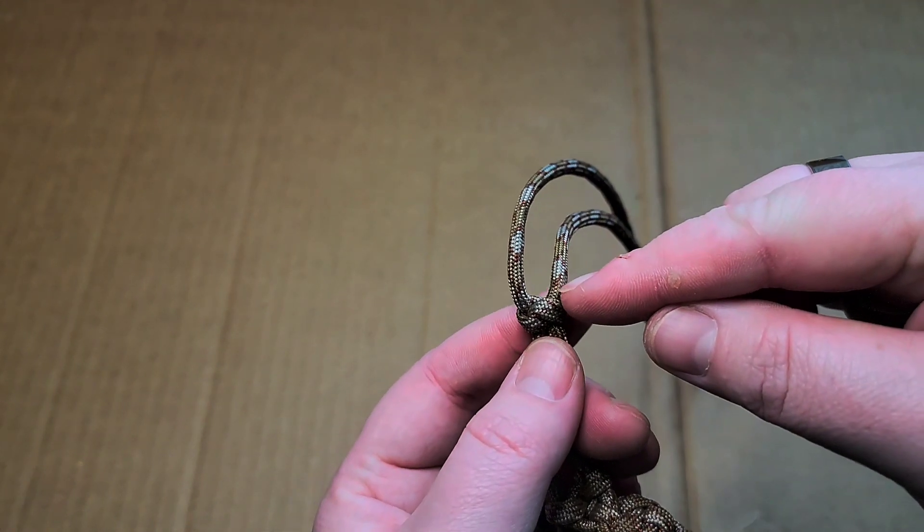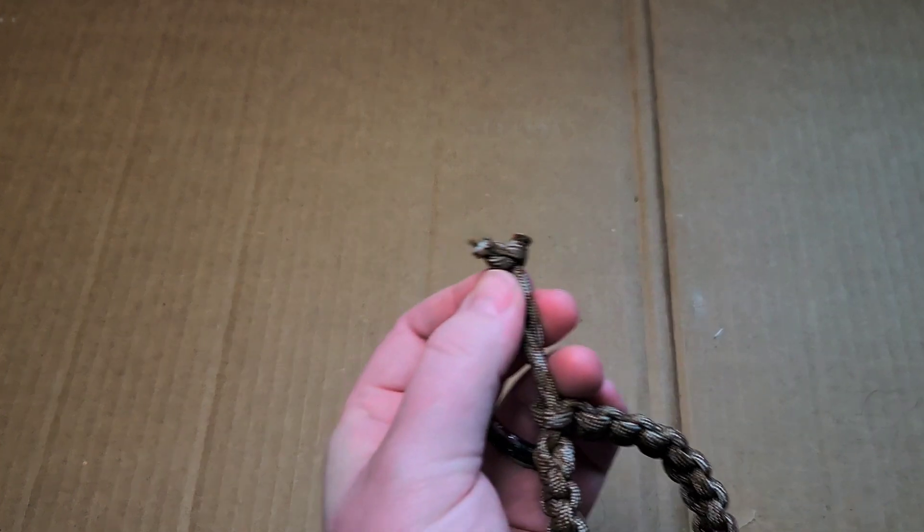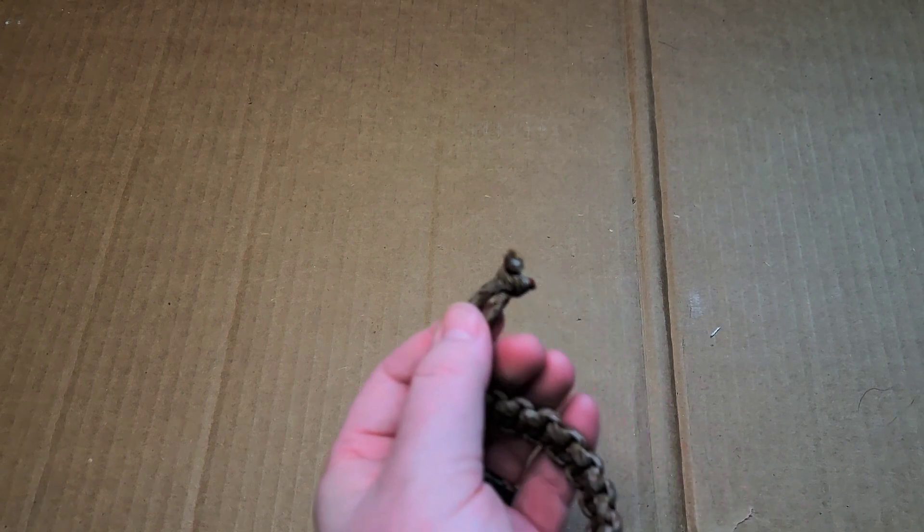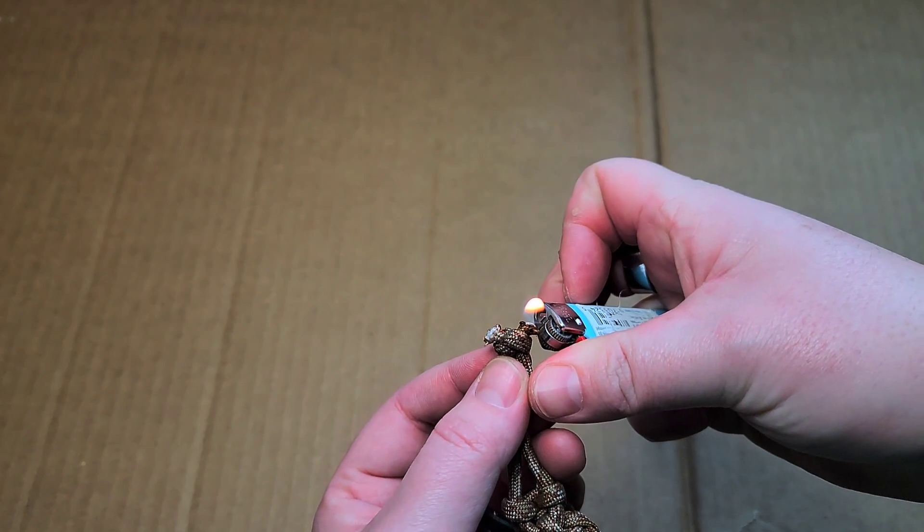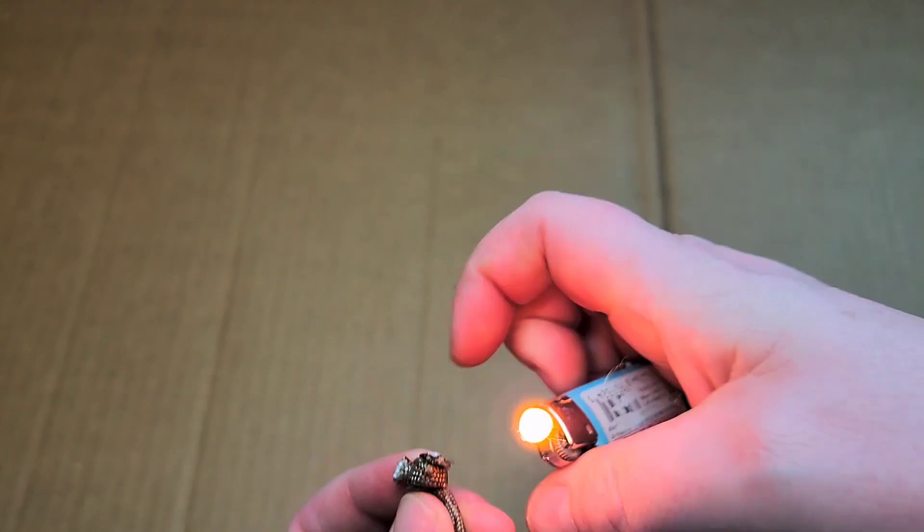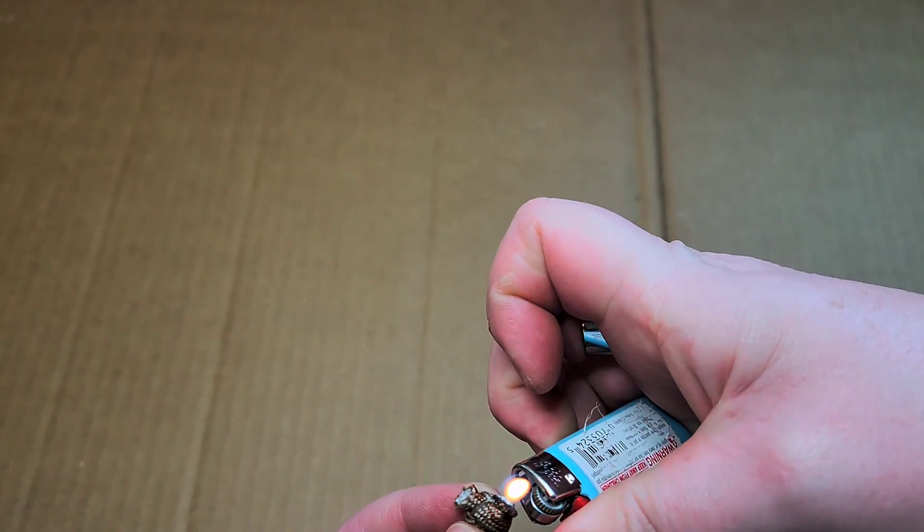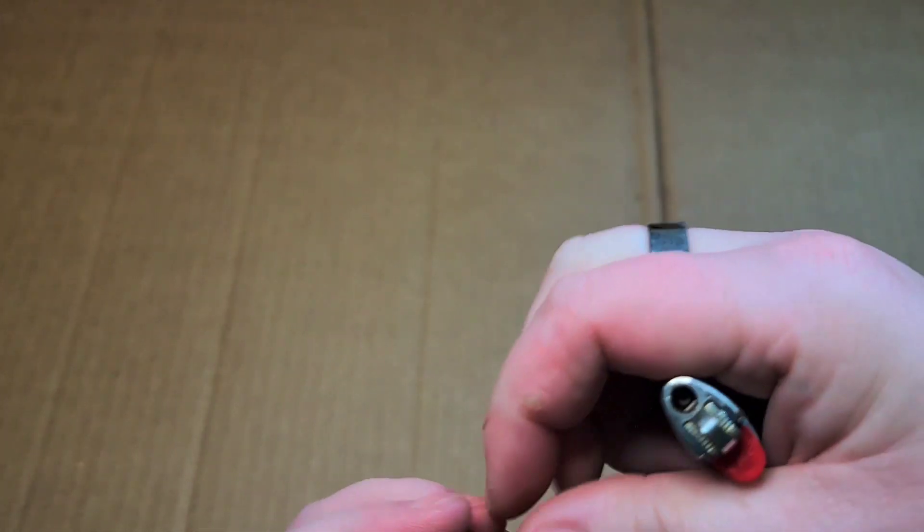I'm going to cut. I usually leave just a little bit and I cut pretty close. Like that. And then I'll take, burn these ends down. And I just flatten them so they don't go back through the knot.